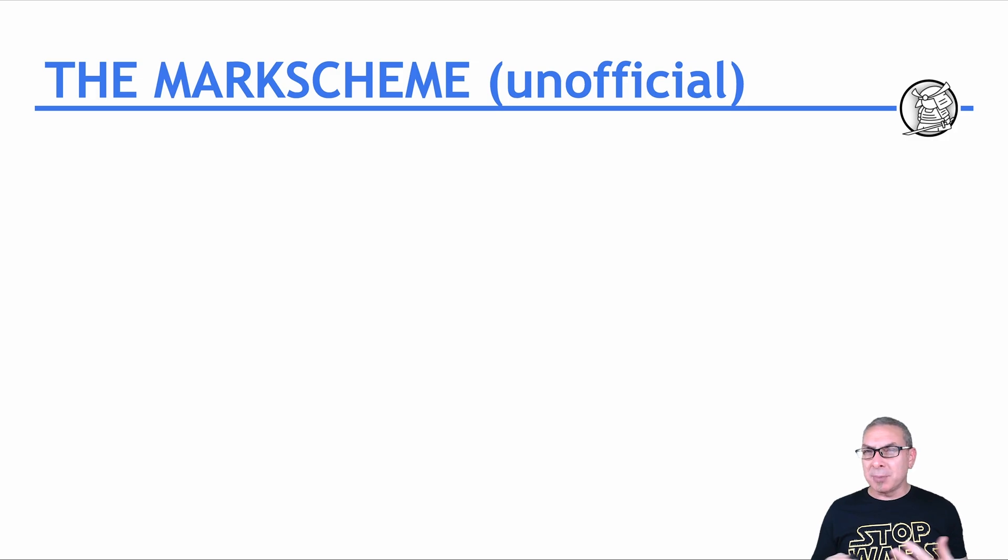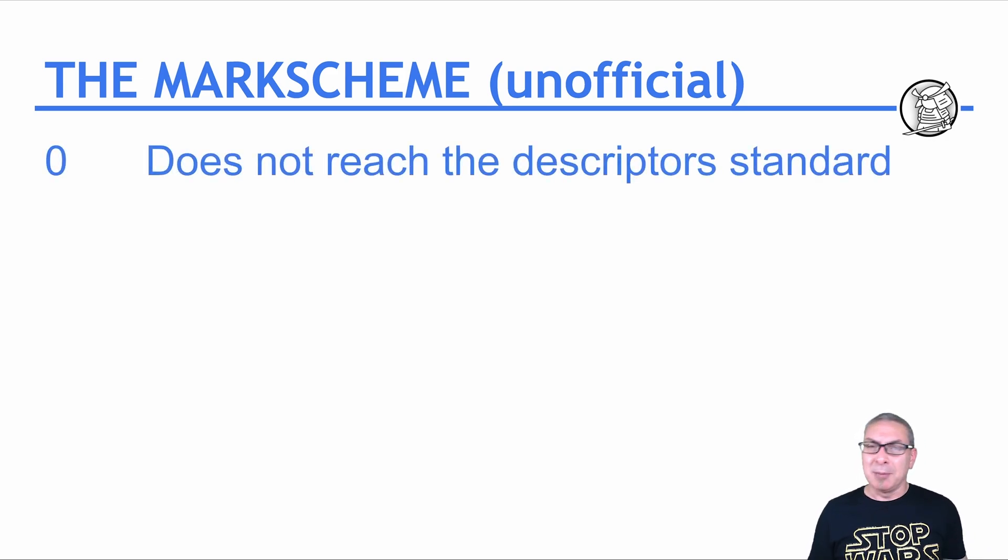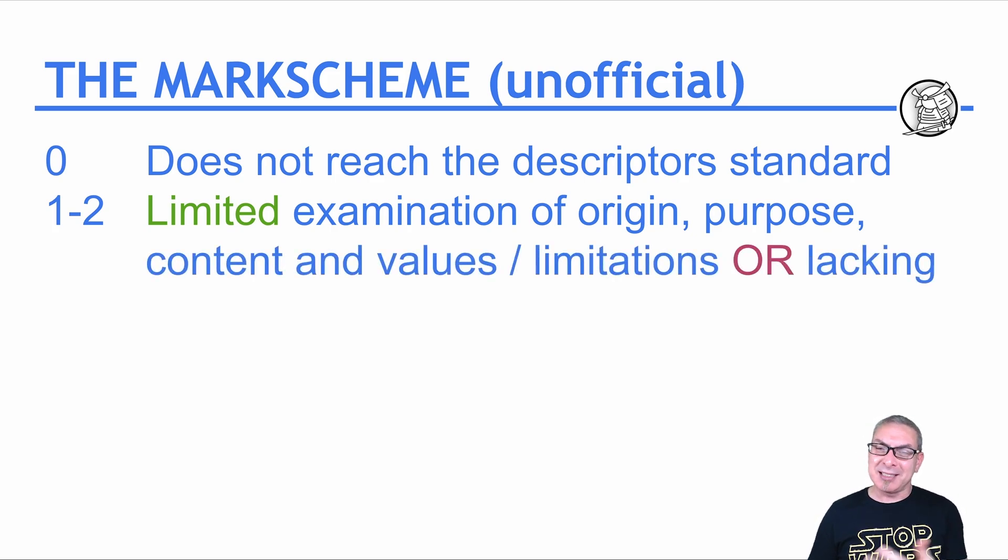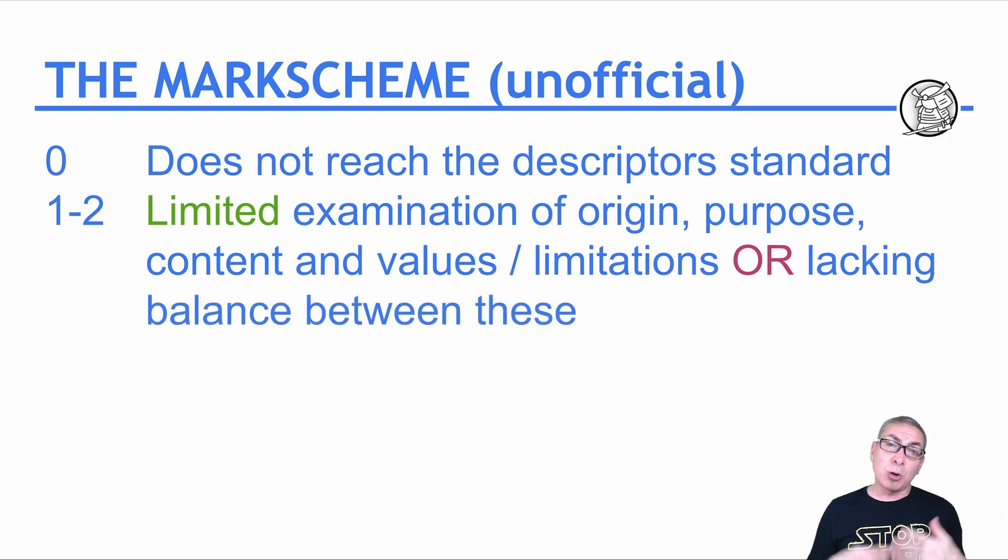So for the second question on Paper 1, there is no official markband or mark scheme. You get that for the third and fourth questions. But this is one that might give you kind of a bit of help. Let's not talk about zero. One to two points, it means you have kind of a basic limited examination of the origin, purpose and content, and the values and limitations, or perhaps you're lacking a balance. You do need values and limitations in your response.